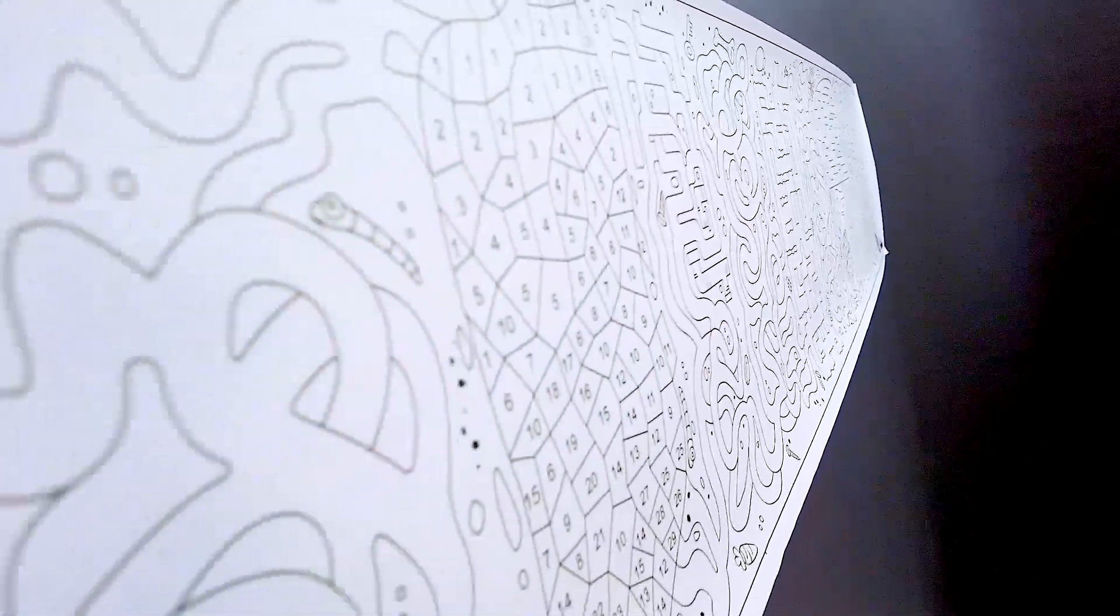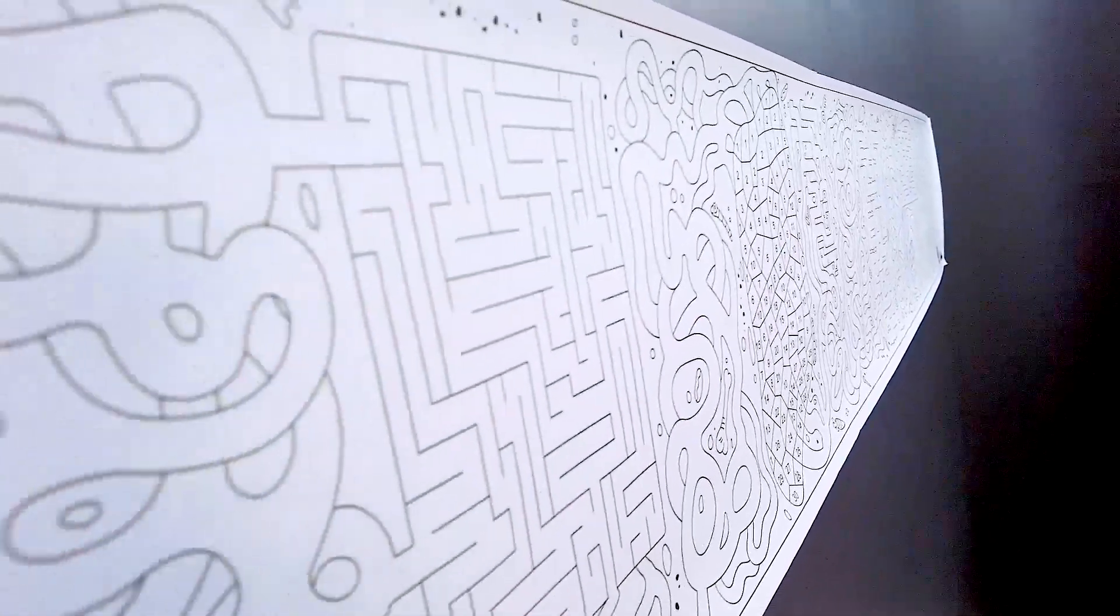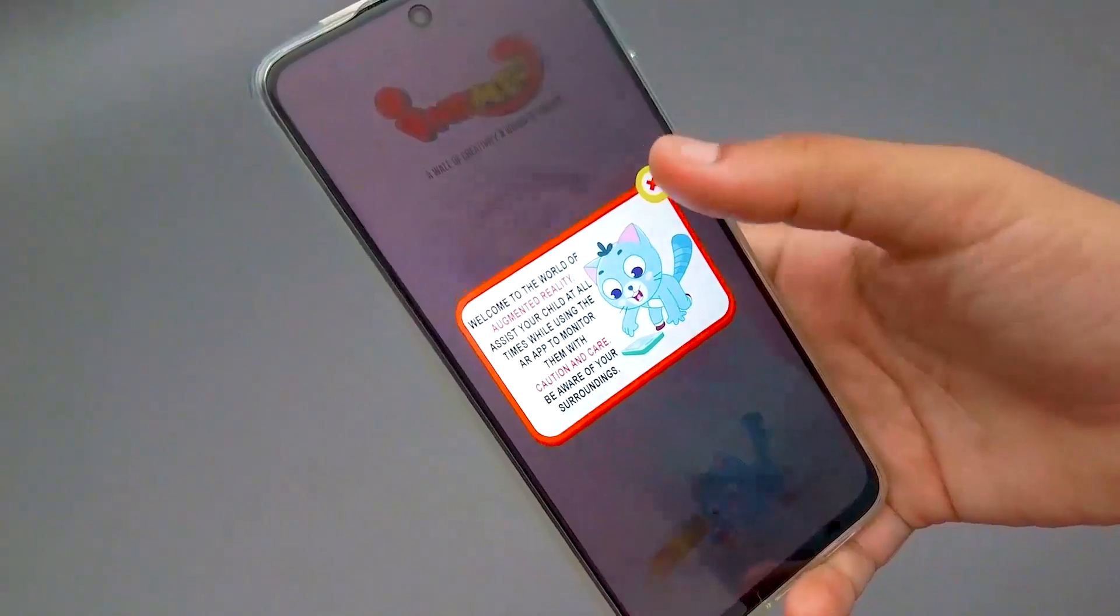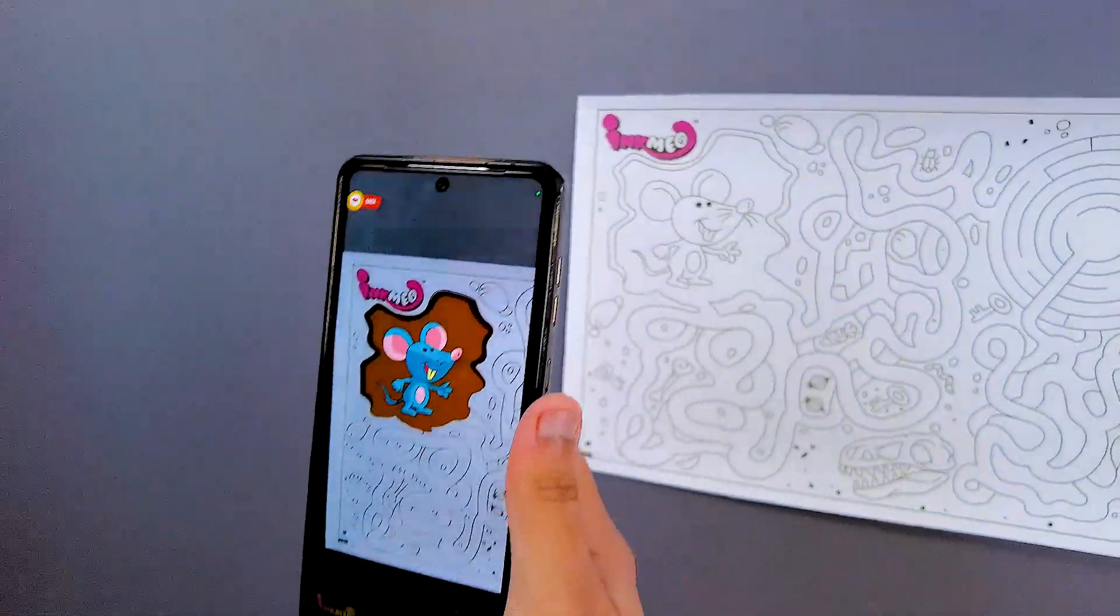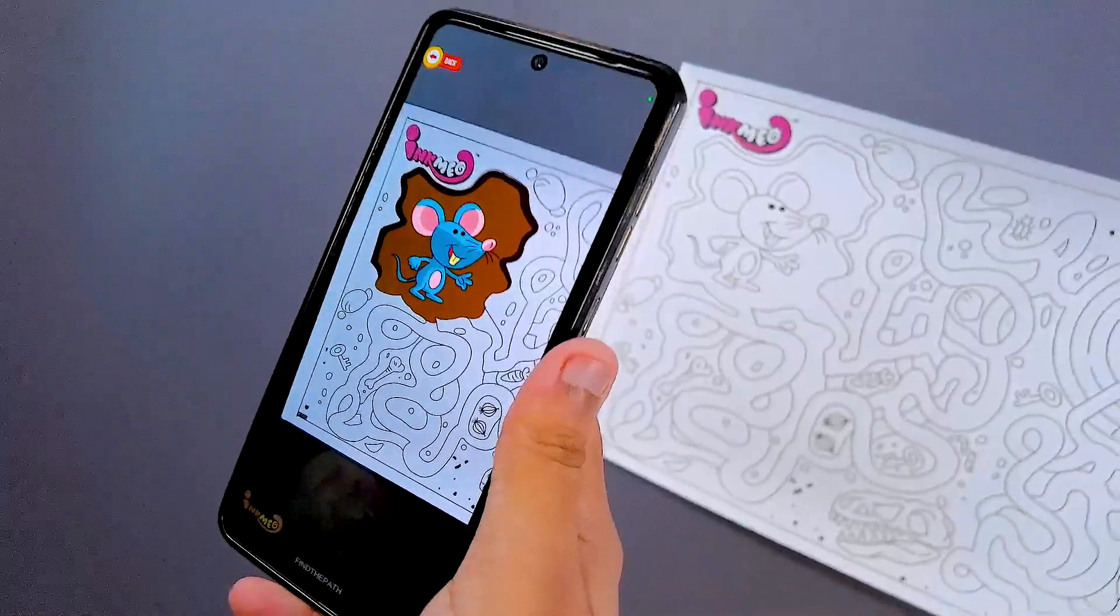Utilizing the advancement of technology, all our Incmeo roles are supported by the augmented reality app, allowing you to simply scan any image on the role and view the colored picture pop up on your gadget.